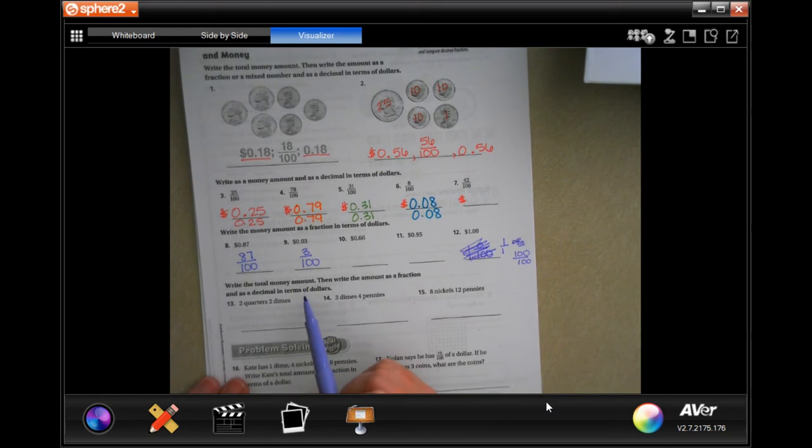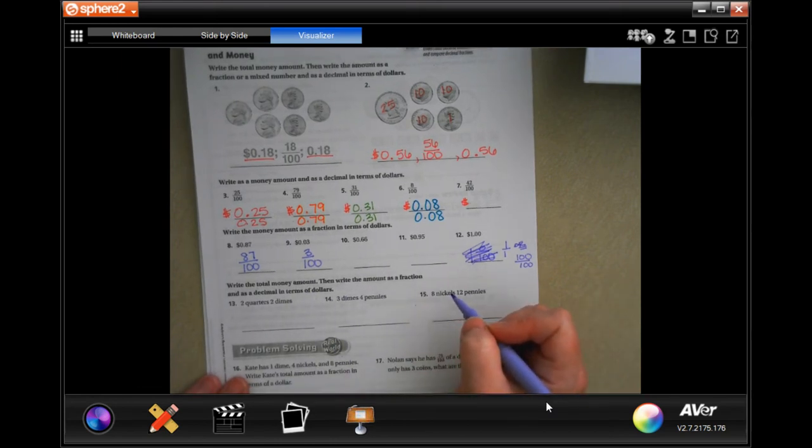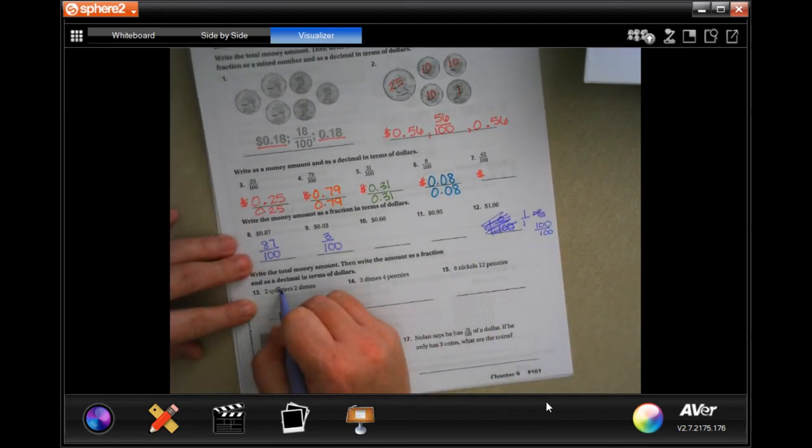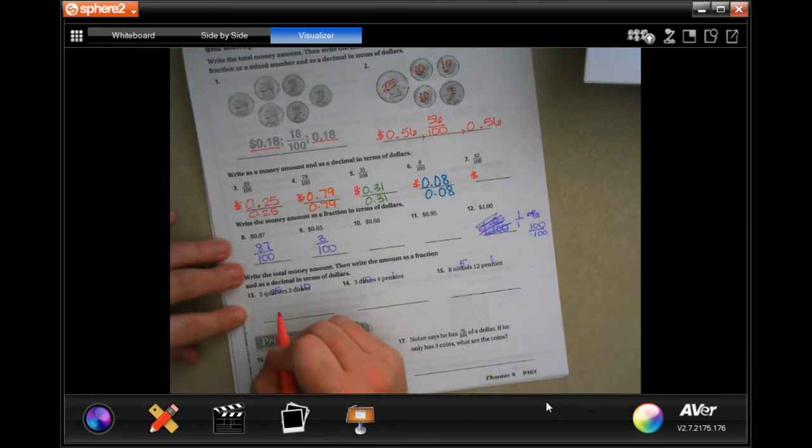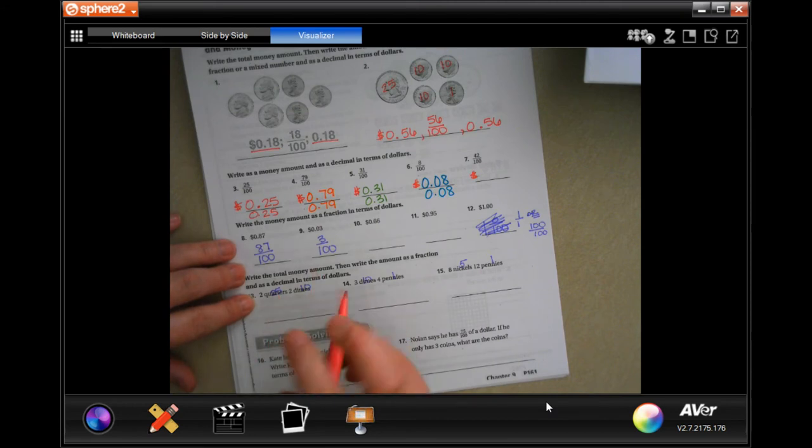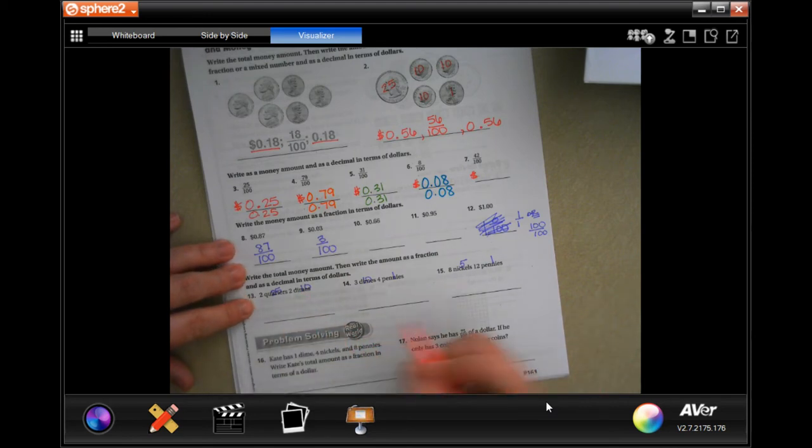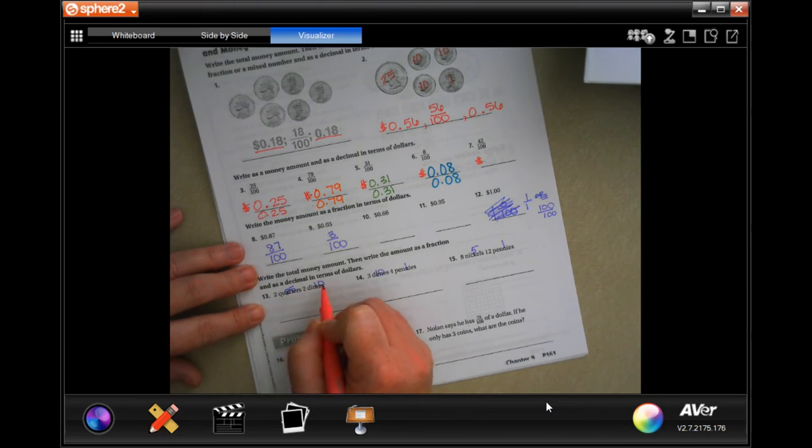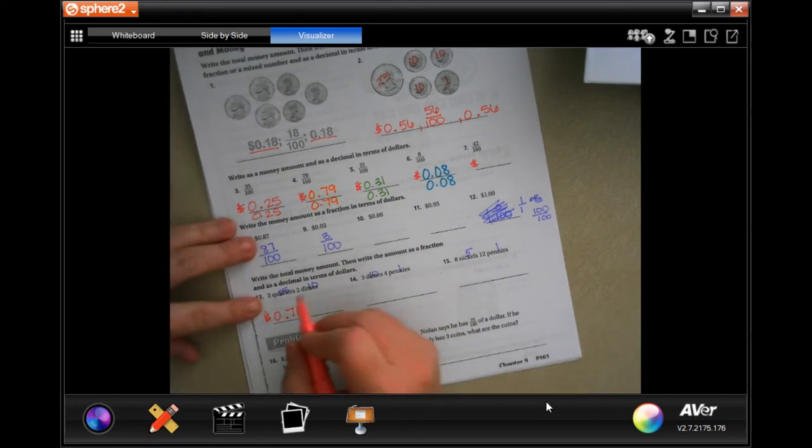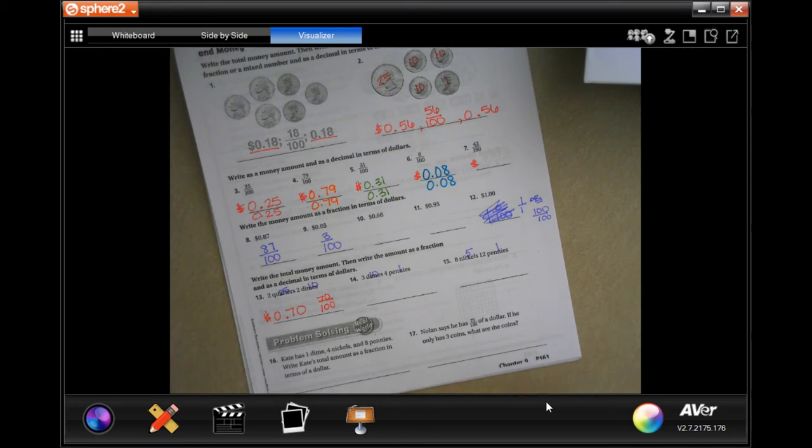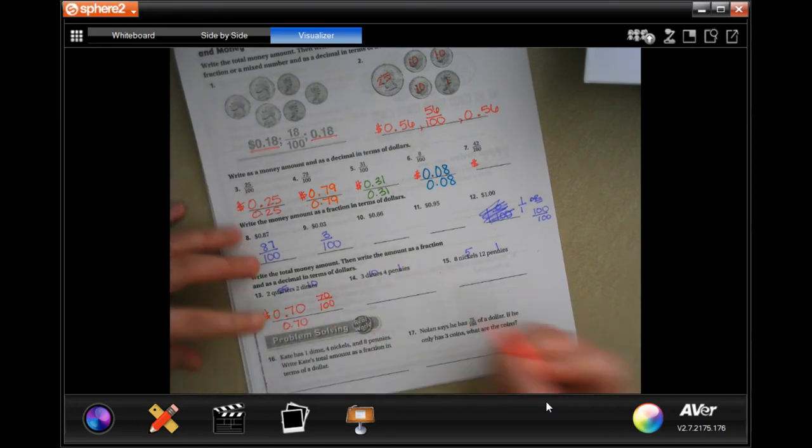Write the total money amount. Then write down the amount of the fraction and of the decimal in terms of dollars. So, quarters, I'm just going to write 25 and dimes, I'm going to write 10. Dime, I'm going to write 10. Pennies is one. Nickels is five. Pennies is one. All right. So, now, two quarters. Well, quarters are 25 cents. If I have two quarters, that's 50 cents. And then two dimes. So, I have to add 20 more to that. Because the dime is worth 10. So, 50 cents, 60, 70. So, 70 cents. So, now, the amount of the fraction is just going to be 70 over 100. Now, as a decimal, that's just going to be 0.70.